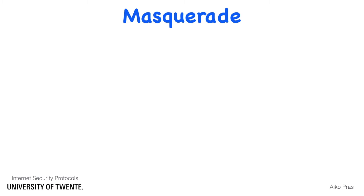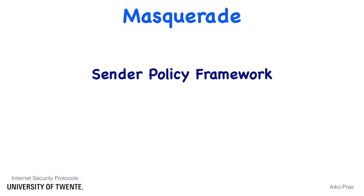Changing the sender's identity with email is relatively simple, although protection mechanisms exist such as the Sender Policy Framework. Technically, it is also relatively easy to change the source address of IP messages.